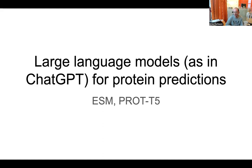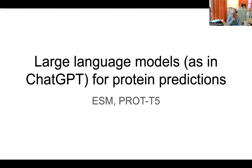Some of the most famous examples are the ESM set of protein models, developed by Meta (Facebook), particularly by Alexander Rives. That group is now an independent company. Then there's ProtT5 and other methods developed by Burkhard Rost on the academic side. It has also been used for OmegaFold, another folding program, and both AlphaFold and RoseTTAFold use it as part of their training.